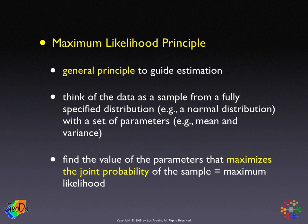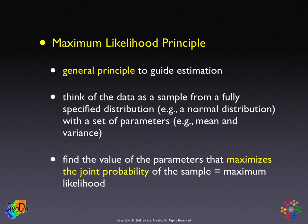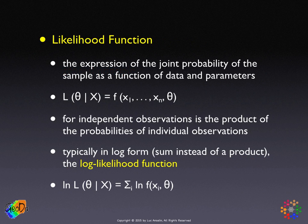The maximum likelihood estimation principle is this idea of how to carry out estimation to find the parameter values that maximize the joint probability. This is a very parametric approach because we have to specify the distribution. Once we do that, everything is set and it becomes a fairly straightforward optimization problem.